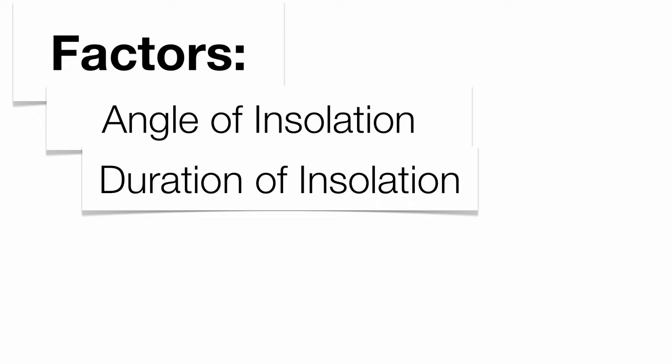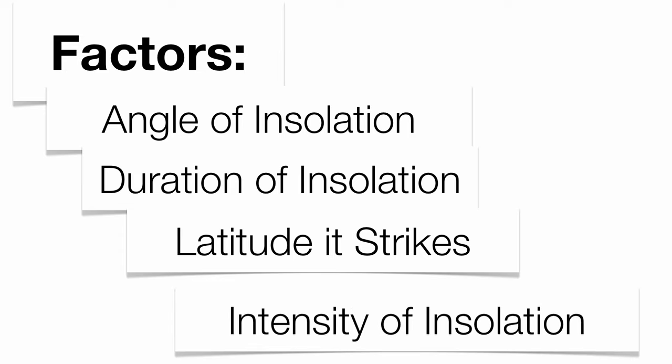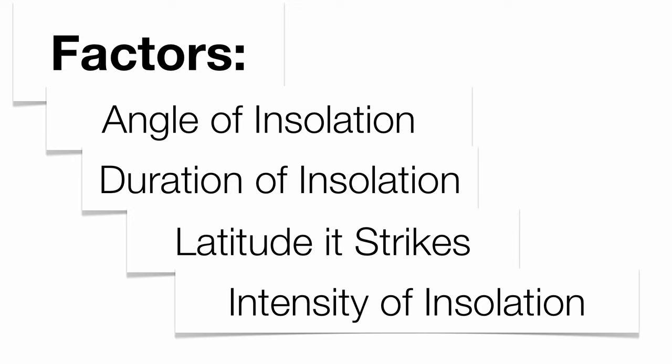How long the sun's going to be out matters. In the summer here in New York, it's out for about 15 hours. In the wintertime, it's out for only about 9 hours. The latitude that it strikes is going to be important — the North Pole and South Pole are much colder than the equator. And the strength of insolation: the higher the angle, the greater the intensity; the lower the angle, the weaker the intensity.